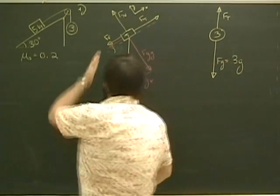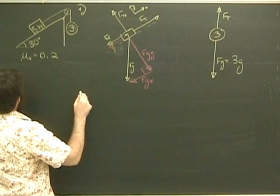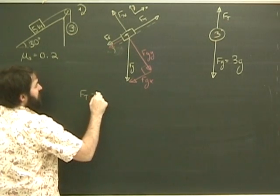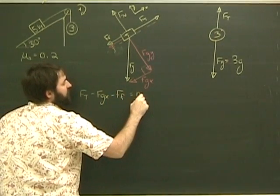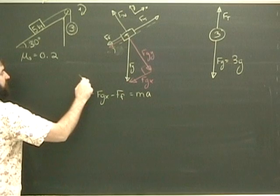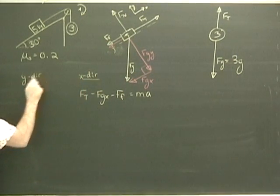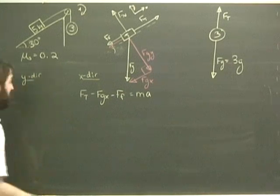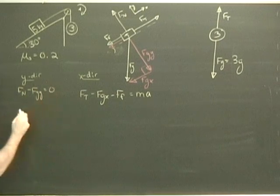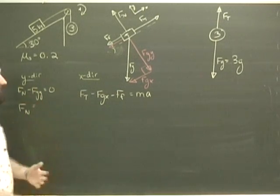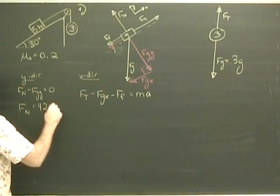So if we look at our 5 kilogram mass, we get the same expression we had before. The tension minus Fgx minus the force of friction equals ma in the x direction. And if we look in the y direction, Fn minus Fgy equals 0, which means that the normal force is equal to Fgy, which is going to be 42.4 newtons.